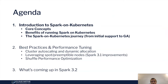So, what are we going to talk about? First, I'm going to introduce Spark on Kubernetes — the core concepts, the benefits, the history of this journey. Then we're going to dive into the meat of the topic: best practices and performance tuning, covering different technical topics in a pretty hands-on way. And we'll finish with an outlook at what's coming up in the next version of Spark, which is Spark 3.2.